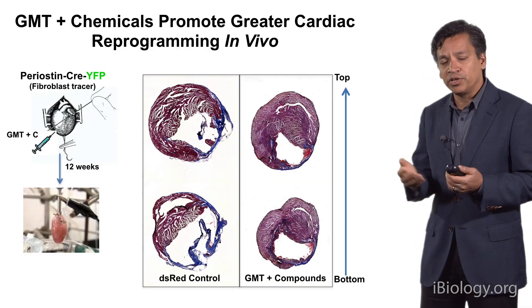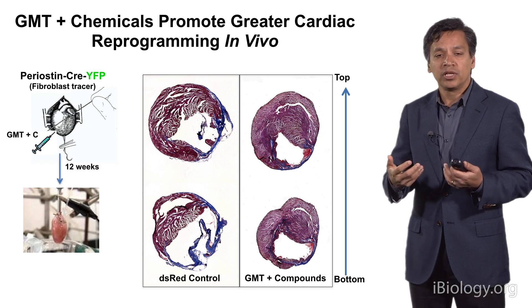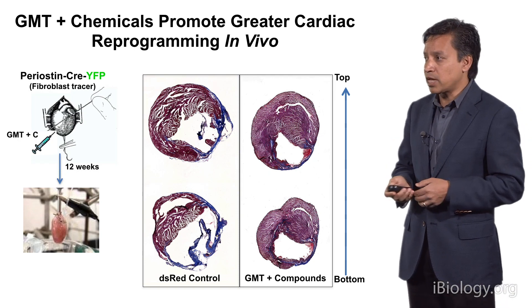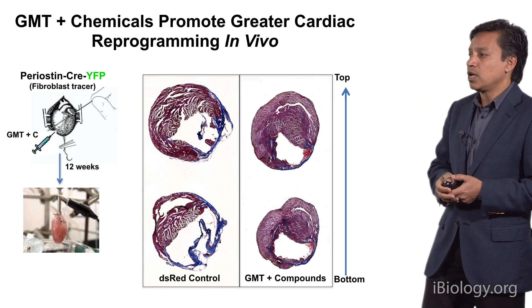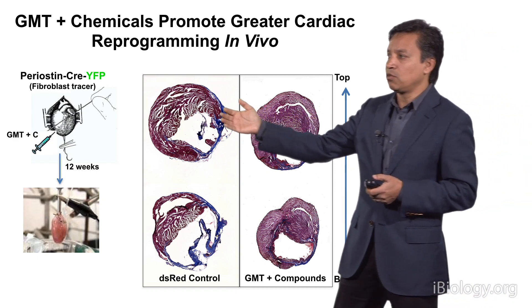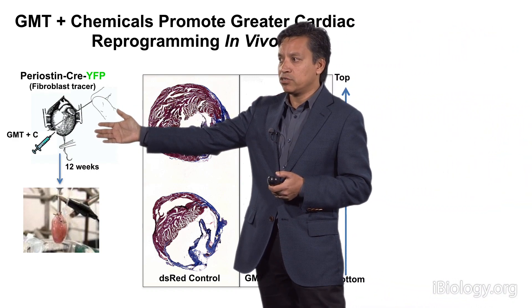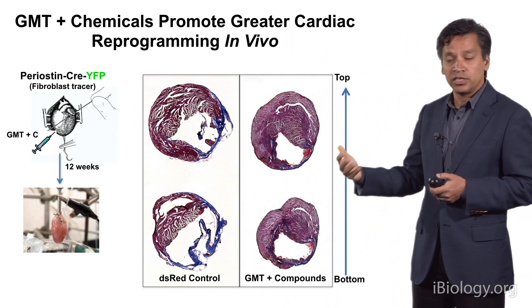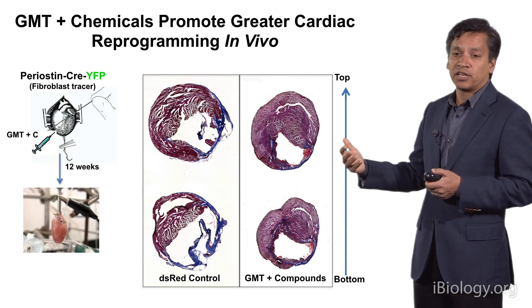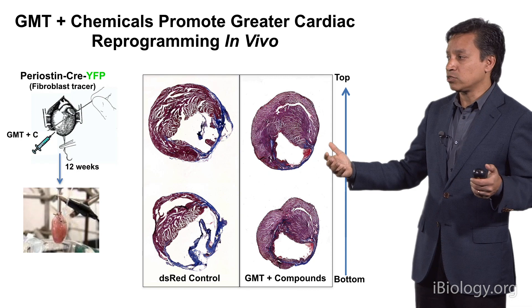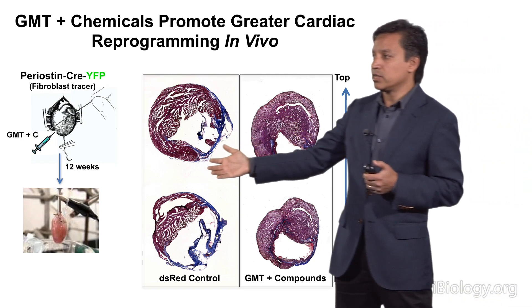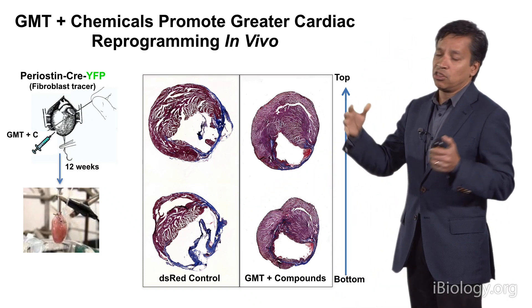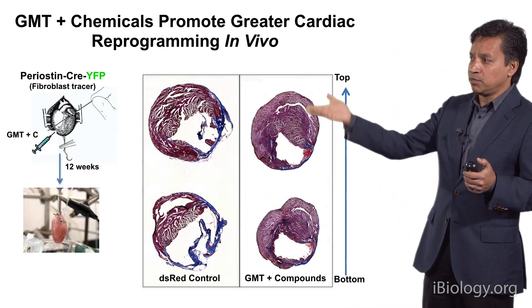We wanted to know: can these chemicals improve the ability of these genes to reprogram in vivo and improve function? It turns out that if we repeat the earlier experiment, injecting not only the genes with the virus into the heart but also treating the animals with chemical inhibitors of Wnt and TGF-beta for a couple of weeks, we see much more robust formation of new muscle. In the control setting, at the apex of the heart you see a lot of scar tissue that decreases as you go higher up in the ventricle.